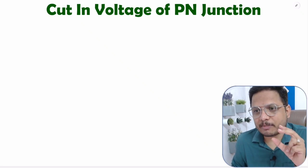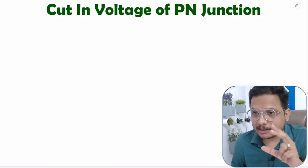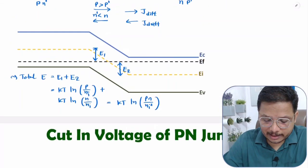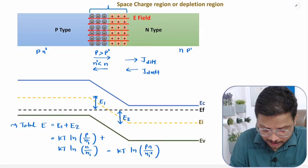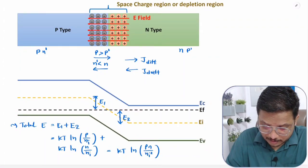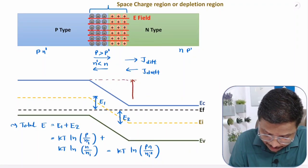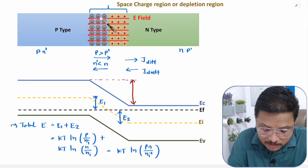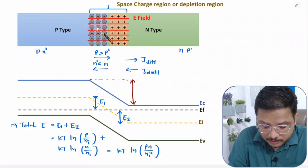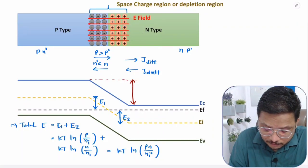This cutting voltage or potential barrier can be easily derived from the energy band diagram. In my last video, I explained how the energy band diagram looks for a PN junction. We saw how much band bending is happening due to this PN junction, and at the PN junction there is a potential barrier or cutting voltage, happening because of these negative and positive ions. In this video, I will be deriving how much voltage is happening because of these ions and the energy band.